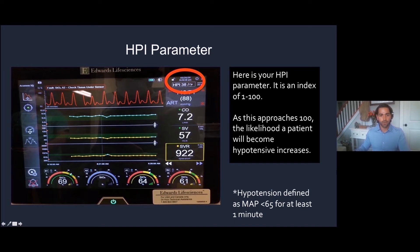Up in the right-hand corner here, this is your HPI, your hypotensive predictive index on a scale of 1 to 100. The closer you get to 100, like Dr. Scott said, the likelihood of hypotension increases.